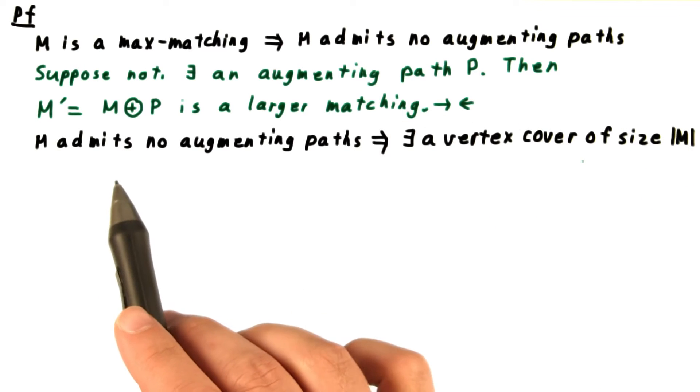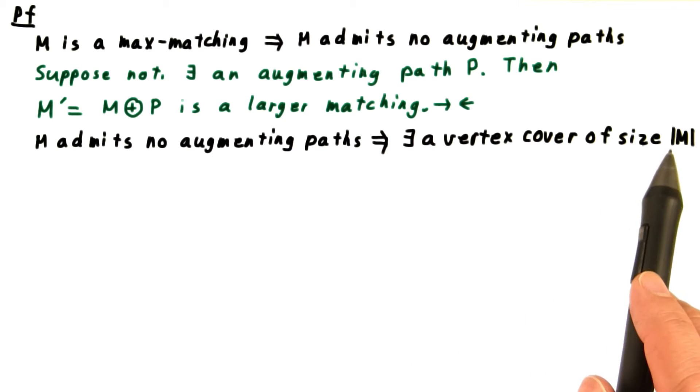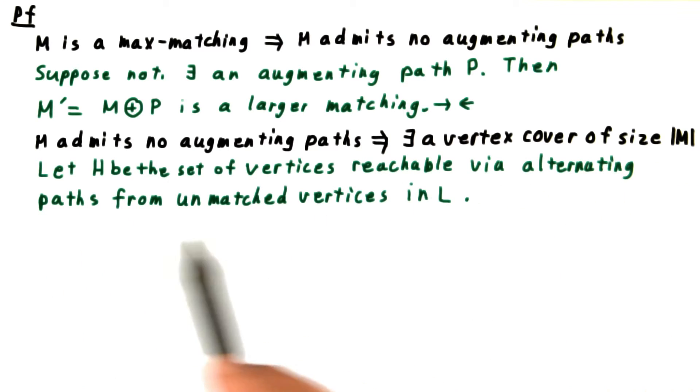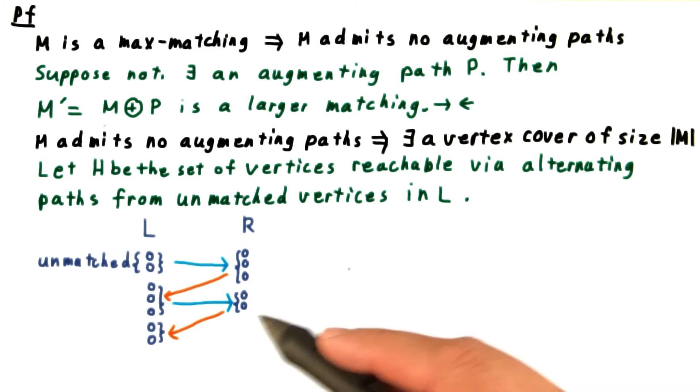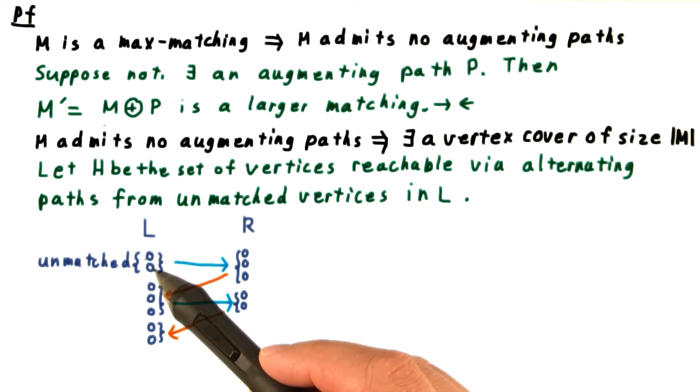Next, we argue that if M admits no augmenting paths, then there exists a vertex cover that has the same size as M. This is the most interesting part of the proof. We'll let H be the set of vertices reachable via an alternating path from unmatched vertices in L. We can visualize this definition by starting with some unmatched vertices in L.